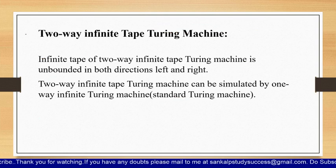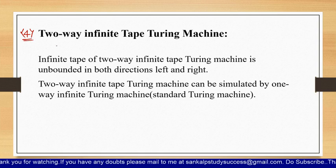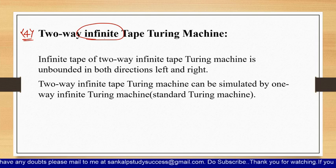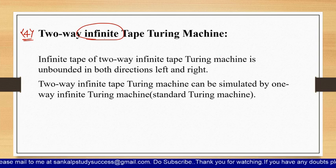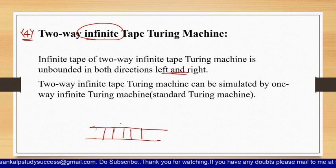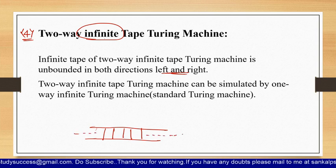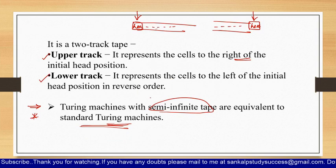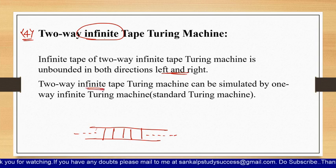The fourth type is the two-way infinite tape Turing machine. From the name itself, the tape is infinite to the right and also infinite to the left — a two-way infinite tape. The tape is unbounded in both directions, left and right. The input tape is divided into several cells containing the input string, and it is infinite in both directions. This two-way infinite tape Turing machine can be simulated by a one-way Turing machine, and just like the semi-infinite tape, it is also equivalent to the standard Turing machine.